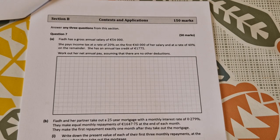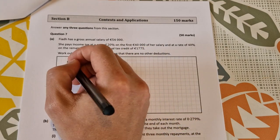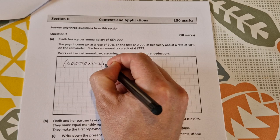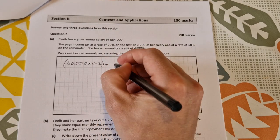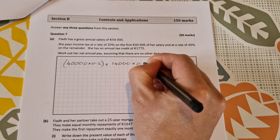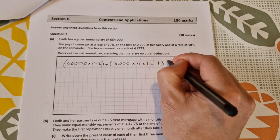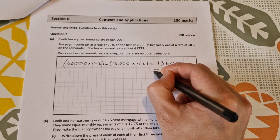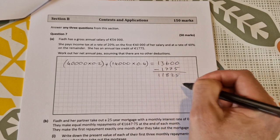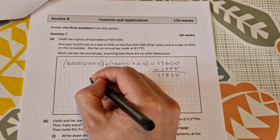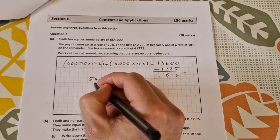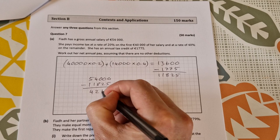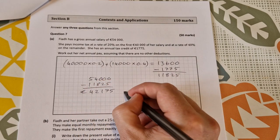We need to work out her net annual pay assuming there's no other deductions. So we do 40,000 by 20%, so that's 40,000 times 0.2, and we'll add to that the remainder which is 14,000 times 0.4. That gives us the gross tax of 13,600. We take away the tax credit, minus 1,775, that gives you 11,825. Then you just take that off her gross salary, so 54,000 minus 11,825 gives you 42,175.